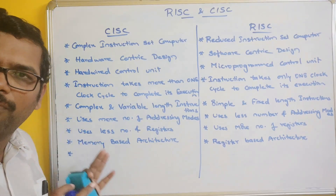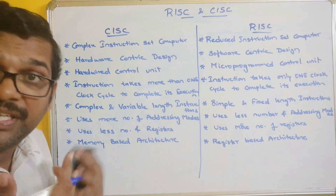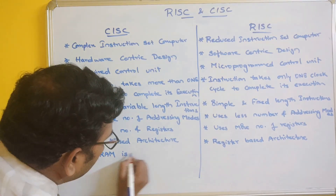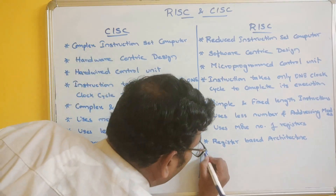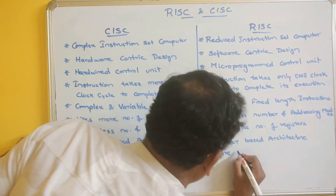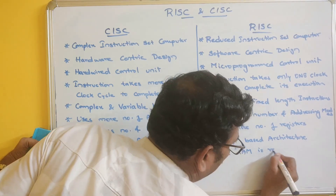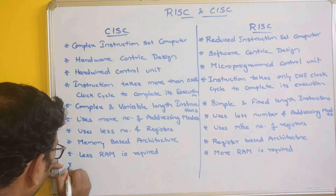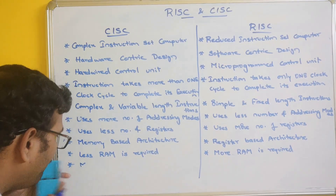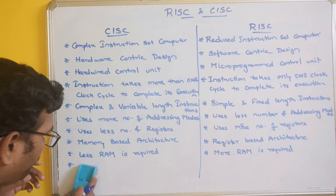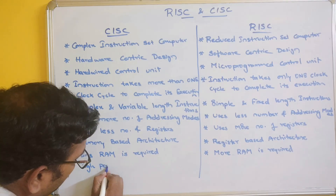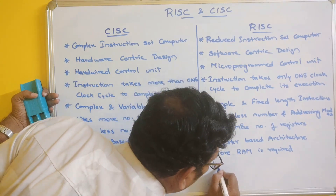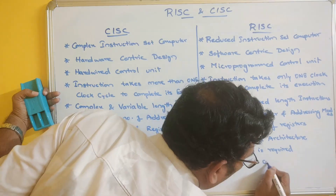CISC requires less amount of memory, so less RAM is required. In RISC, more RAM is required. CISC has high power consumption, whereas RISC requires low power consumption.